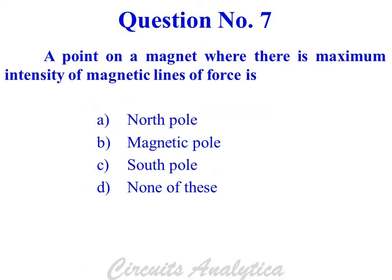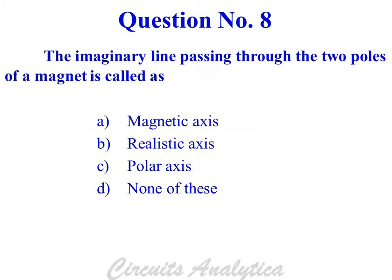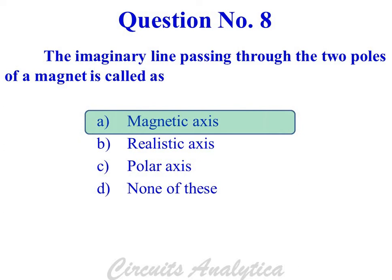A point on a magnet where there is maximum intensity of magnetic lines of force is called a magnetic pole. The imaginary line passing through the two poles of a magnet is called the magnetic axis.